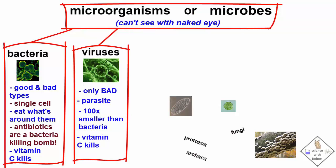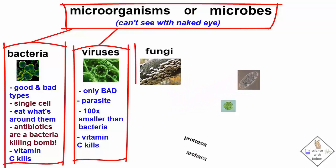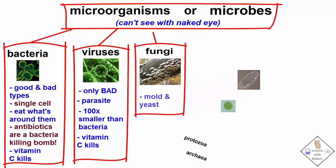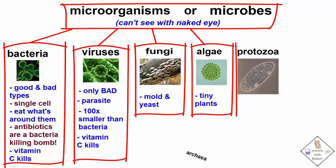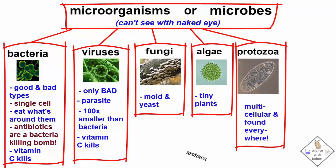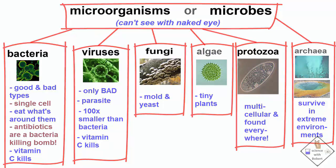The remaining types of microbes include fungi, like yeast and molds, algae, which are really tiny plants, and protozoa. Protozoans are found everywhere, including our soil, air, water, and are multicellular. Most recently, we have archaeans, which are the only microbes that can survive in extreme environments, like hot springs and deep underwater vents.